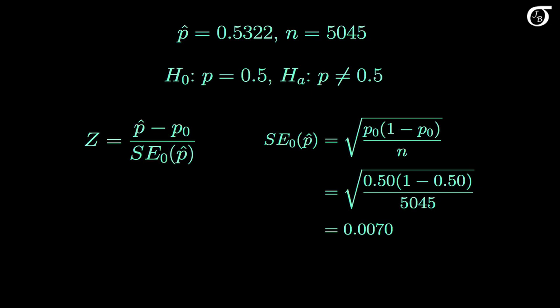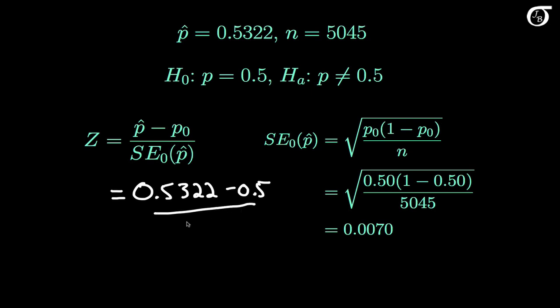Once we've got the standard error, the Z statistic is simple to calculate. The Z statistic is equal to the sample proportion of 0.5322, minus the hypothesized proportion of 0.5, divided by the standard error of 0.0070. And if we carry all of the decimal places throughout the calculation, which we should do, we'd see that this is equal to 4.576.